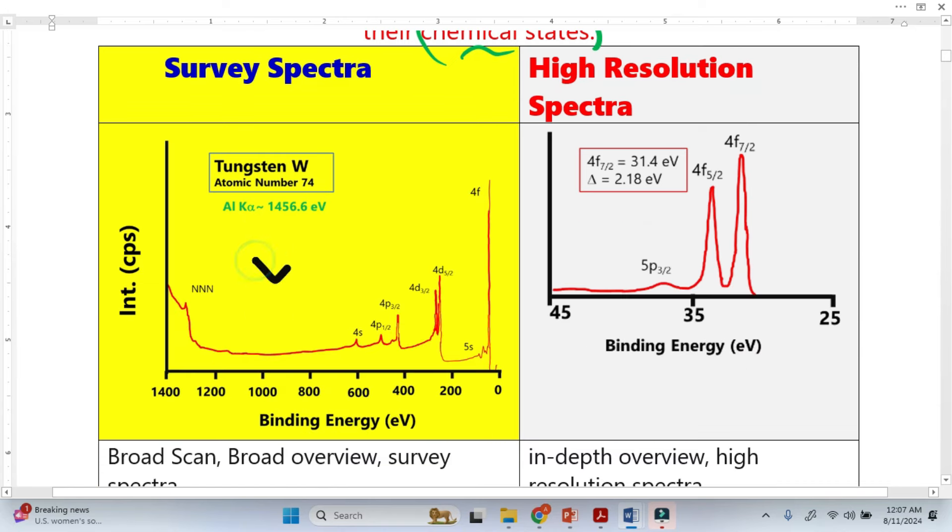In survey spectra, we consider all peaks like the photoelectron peaks, the Auger peaks, and also some satellite peaks, ghost peaks, and loss peaks. While in high resolution spectra, we only consider the most important photoelectron peaks or Auger peaks.